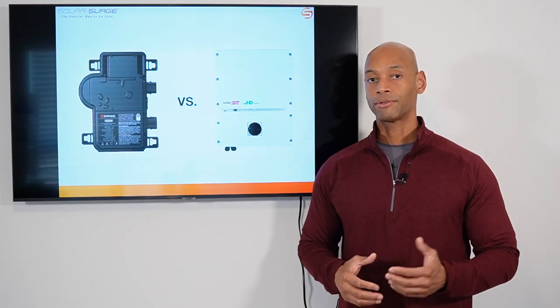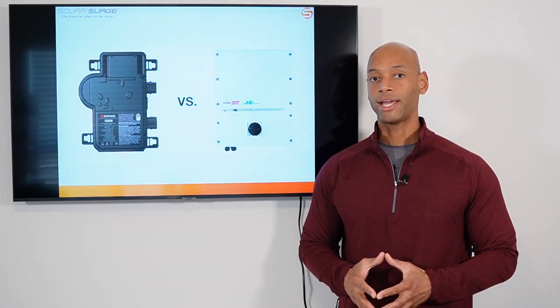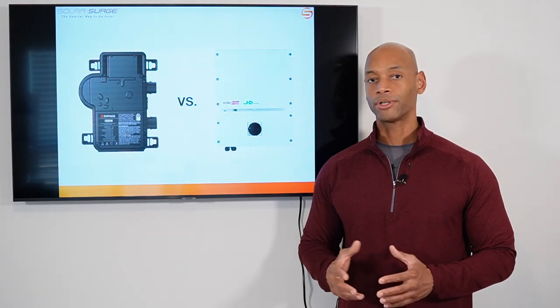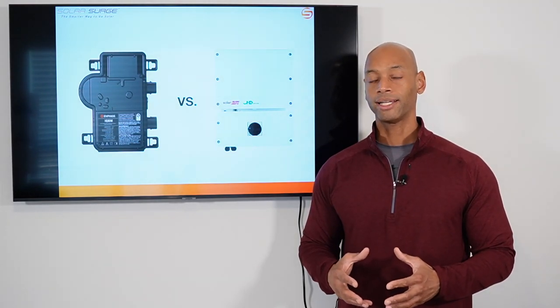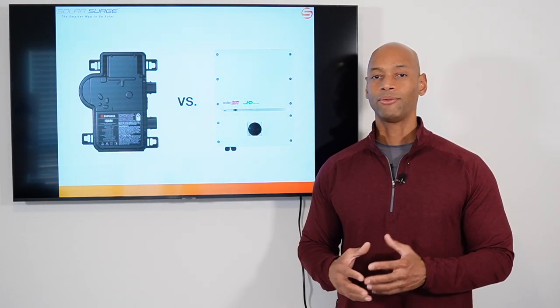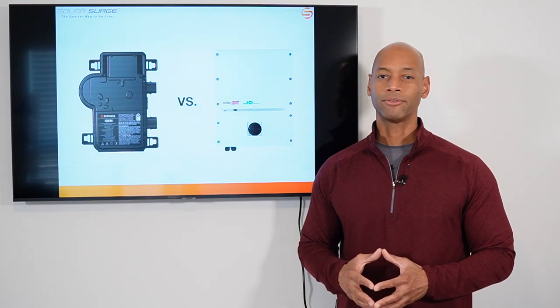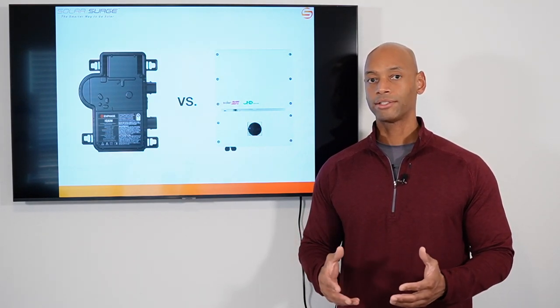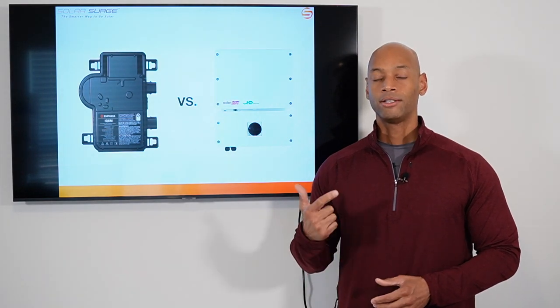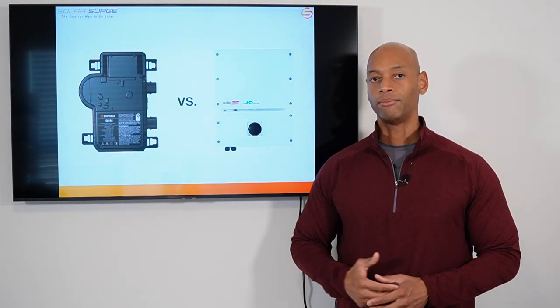And so even now, as of this recording, even with the current generation Enphase microinverters, you're limited to between 11 and 14 microinverters per trunking cable. So you have to set up a separate cable and the wiring is a little bit more cumbersome on the roof. But all in all it was a great solution, solved the single point of failure problem, solved the module level monitoring problem.